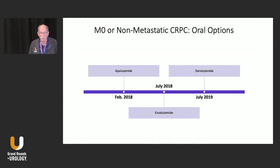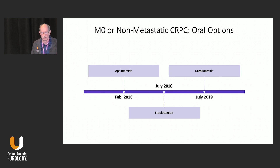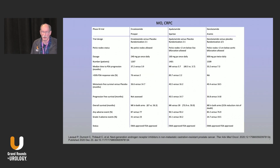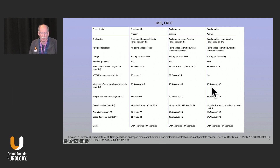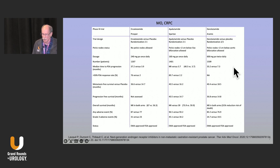In the M0 or non-metastatic space, these are the oral options that were approved. Apalutamide was first — it only took one week from publication to FDA approval — based on metastasis-free survival showing overwhelmingly dramatic improvement over placebo plus ADT alone. Then enzalutamide, and then darolutamide in July 2019. The PROSPER, SPARTAN, and ARAMIS trials were very similarly designed with over a thousand patients each. MFS got everybody's attention and proved to be a very good surrogate for overall survival — the numbers across the three drugs are very similar, and it's very hard to say one is necessarily better than another based on efficacy.